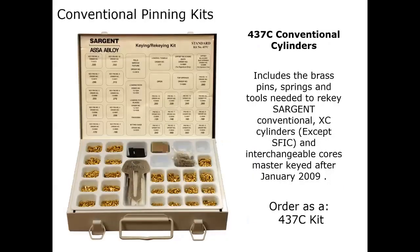Our next slide shows our pinning kit, used for Sargent conventional cylinders for your keyways such as the L family: LA, LB, RA, RB, HA, HB. The pinning kit includes all your bottom pins, top pins, springs, key gauge, tweezers, and some followers — it's the 437C. This is for Sargent cylinders and Sargent large format cylinders. We do not offer keying kits for small format; those are readily available from any aftermarket wholesaler.